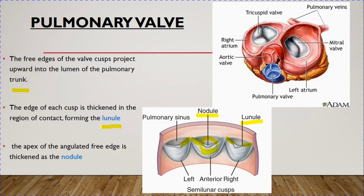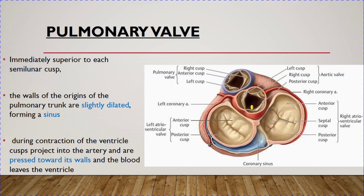When the pulmonary valve is open, the cusps project inside the wall of the pulmonary trunk. Immediately superior to each semilunar cusp, the wall at the origin of the pulmonary trunk is slightly dilated to form a sinus — called the pulmonary sinus. During ventricular contraction, the pulmonary valve opens, the cusps project into the artery, are pressed towards its wall, and blood leaves the ventricle.